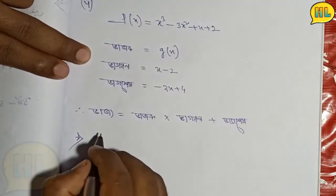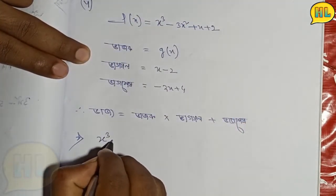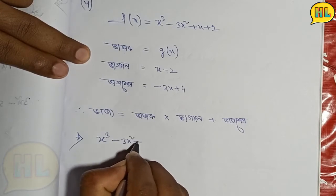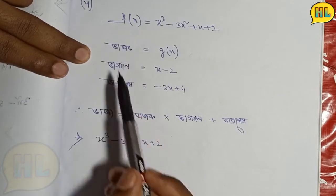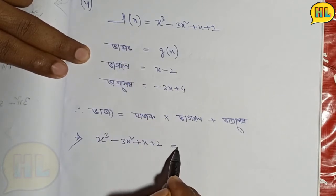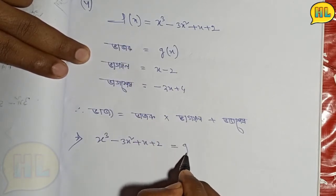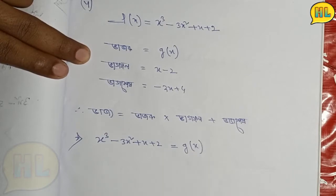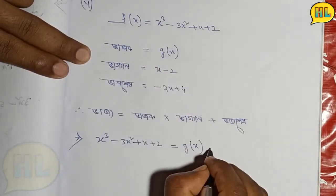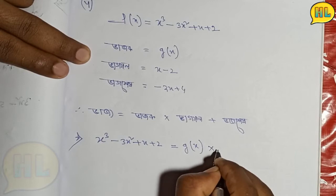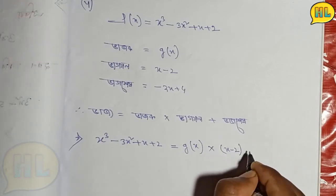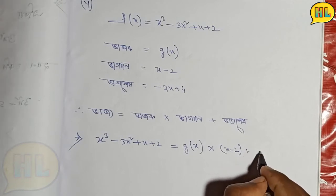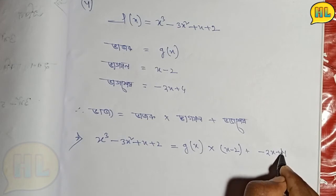So we have x cube minus 3x square plus x plus 2. This is p(x). Now we need to show it equals (x minus 2) times something, plus (minus 2x plus 4).